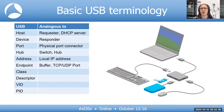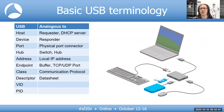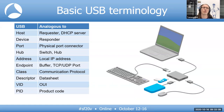USB class pretty much defines the communication protocol. A descriptor is like a data sheet that the host reads to know what type of device it is talking to. Vendor ID is like the OUI except it is only 16-bit, and product ID is also a 16-bit number. Unlike MAC addresses, the vendor ID and product ID pair only identifies the device model, not a particular unit.